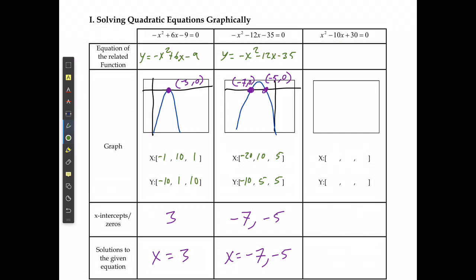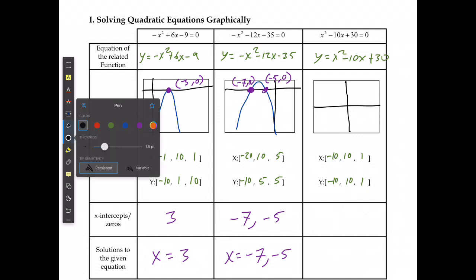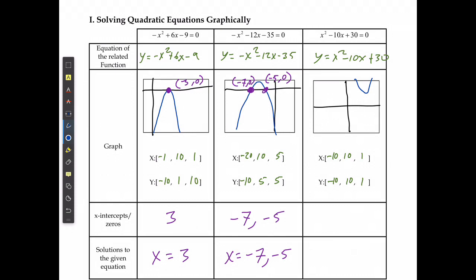For the last example: y equals x squared minus 10x plus 30. Using standard window settings — negative 10 to 10 with scale 1 for both axes — I can see the vertex right away and tell it's never going to cross the x-axis. This means there are no x-intercepts or zeros, so there is no real solution. In a later lesson we'll discuss why we say no real solution as opposed to just no solution.